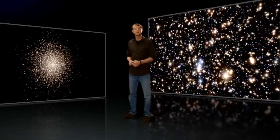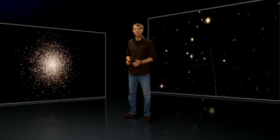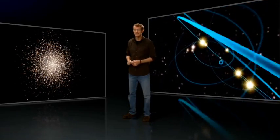Now, new images obtained with the Advanced Camera for Surveys on board the NASA ESA Hubble Space Telescope and data obtained with the GMO spectrograph at the Gemini Observatory show that Omega Centauri appears to be harbouring an elusive intermediate-mass black hole at its centre.